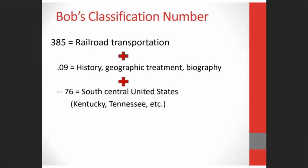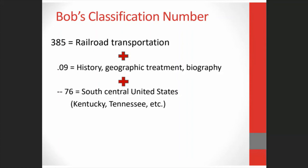Next we want to add more specific geographic information. We go to a table of geographic subdivisions and find 76 for South Central United States. You can find even more specific numbers for states and counties, but we're going to stick with this more general number, which covers Kentucky and Tennessee. So once you add all those numbers together, we find that Bob's classification number is 385.0976 — but we're not done yet.